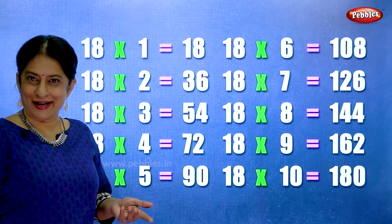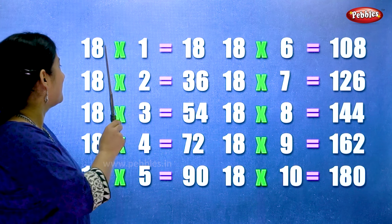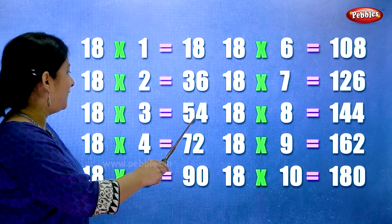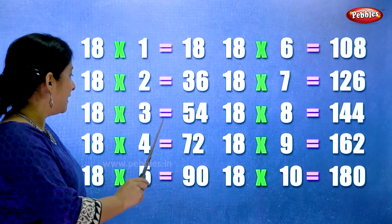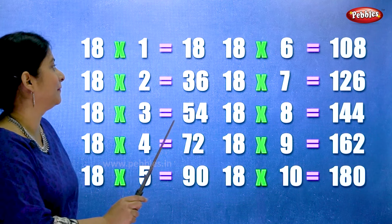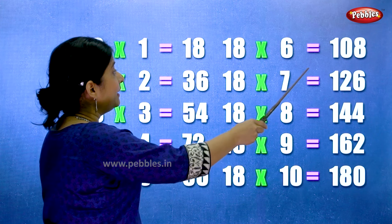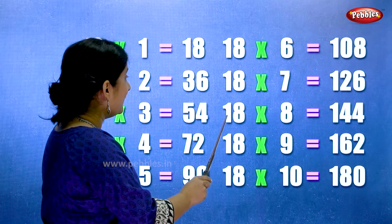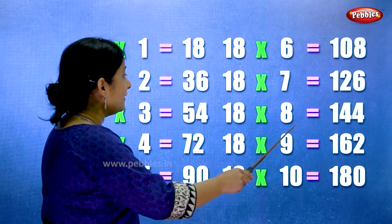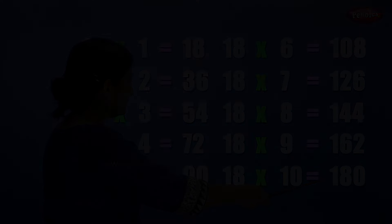Let's learn the table of eighteen one more time. Eighteen ones are eighteen. Eighteen twos are thirty-six. Eighteen threes are fifty-four. Eighteen fours are seventy-two. Eighteen fives are ninety. Eighteen sixes are hundred and eight. Eighteen sevens are one twenty-six. Eighteen eights are one forty-four. Eighteen nines are one sixty-two. Eighteen tens are one eighty.